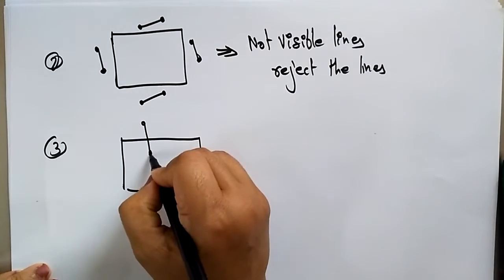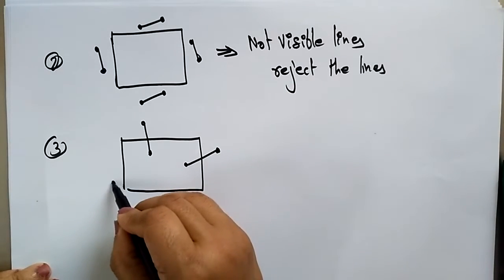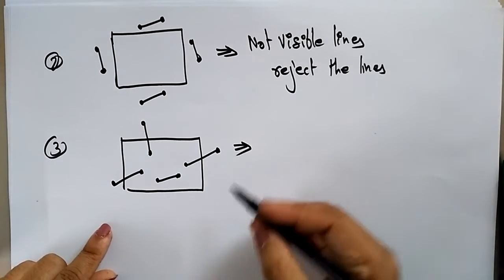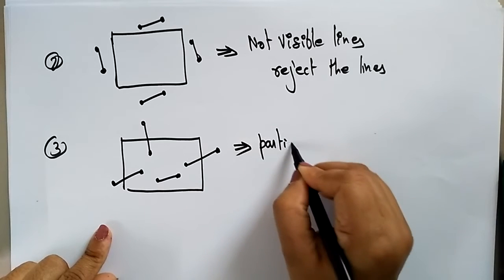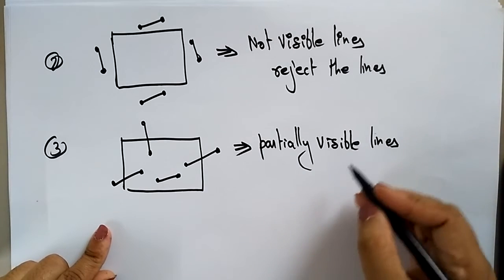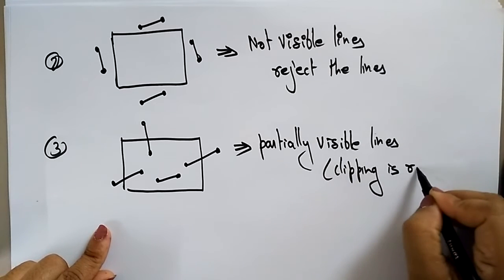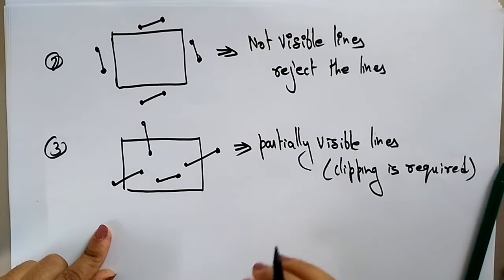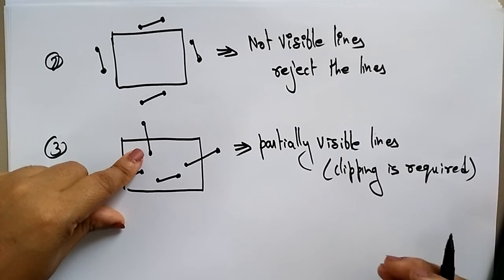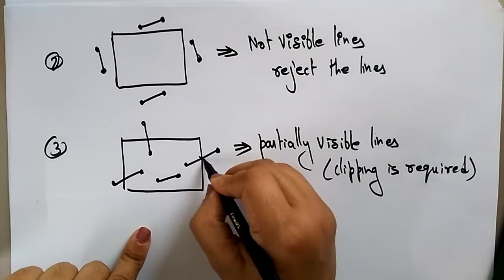If one endpoint is outside the window and another endpoint is inside the window, we call it a partially visible line. In this case, clipping is required because one end is outside and the other is inside. The line intersects the clip window at one or more points, and that intersection point needs to be found.